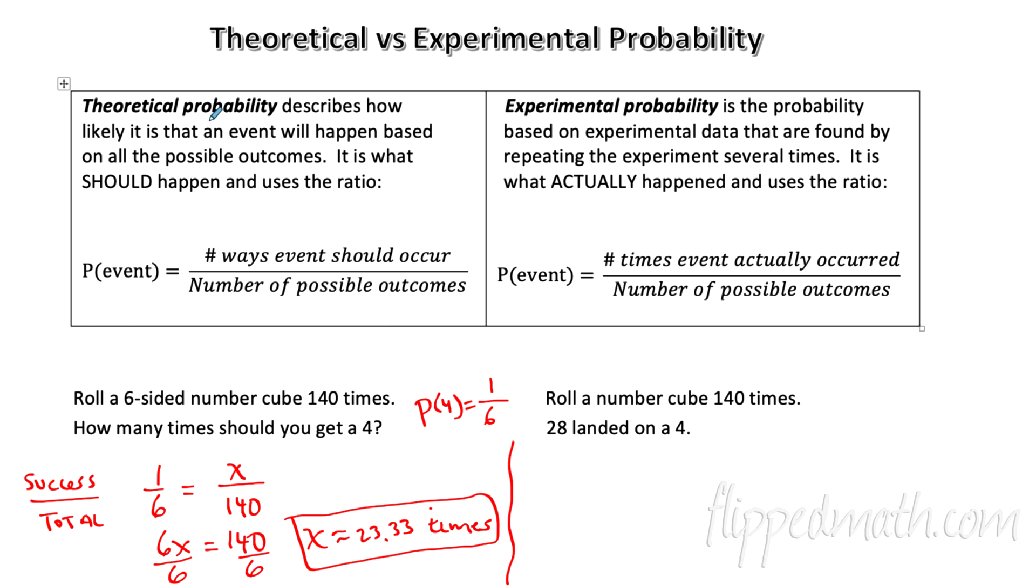Now, if we don't have theoretical probability, then the other type we have, sometimes too hard to figure out that theoretical probability. So the other type we have is called experimental probability. That's based off of running an experiment. We're using experimental data. What that means is we've done something and collected some numbers. So roll a number cube 140 times. I go out in my car and I roll the number cube. 28 landed on a four. So in this case, the probability of getting a four based on our experimental data is 28 out of the total, which is 140. That's what our probability would equal here. Notice the difference. One involves a lot of math, but the other one is just you observe what happened. That's experimental probability.